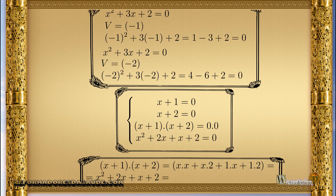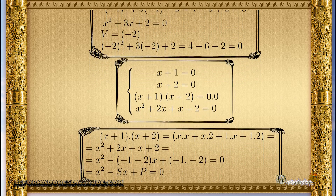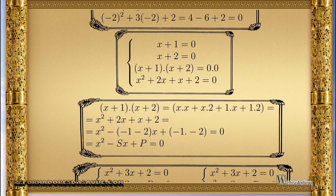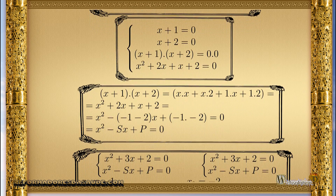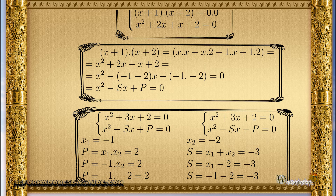After applying the distributive property, we know the roots are minus 1 and minus 2. Adding minus 1 and minus 2 gives minus 3. In the formula, we represent the sum of the roots by the letter S — note that it uses the negative value of the sum.